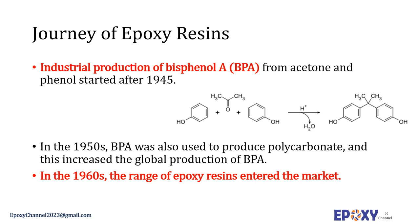For example, Dow Chemical offered epoxidized phenyl novolac resins. Shell introduced multiply epoxidized tetrafunctional phenols. And Union Carbide entered the market with multiply functionalized epoxies in the form of triglycidyl p-aminophenol.